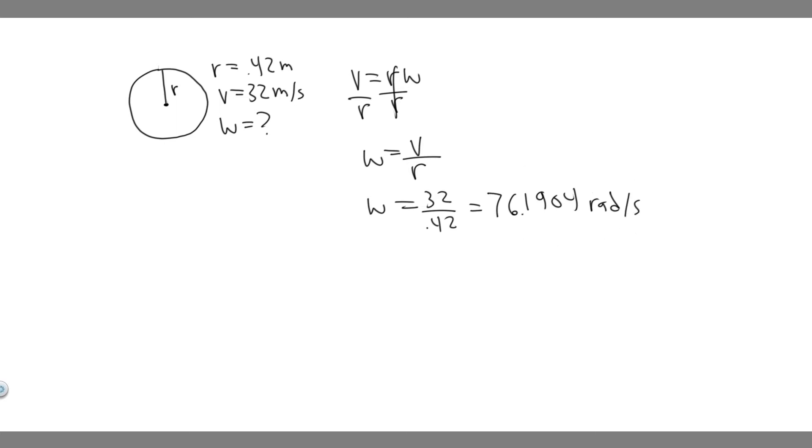So what is the angular velocity in radians per second? 76.1904. You can round however you want. But now what we want to do is find it in revolutions per minute.